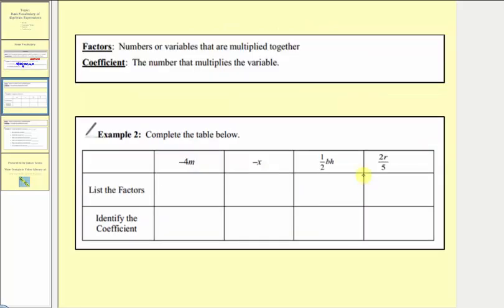Now let's define factors and coefficient. Factors are numbers or variables that are multiplied together, and a coefficient is the number that multiplies the variable. Here we're given four different terms and asked to list the factors and identify the coefficient. Negative four m means negative four times m, so we have two factors: negative four and m. The coefficient is the number multiplying the variable, so our coefficient is negative four.